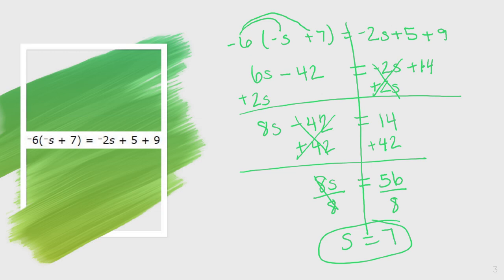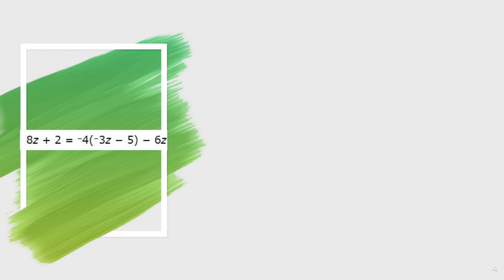Like I said, this is multi-step, so we do have a couple more steps than what we were used to doing earlier. Our next problem: 8z plus 2 equals negative 4 times the quantity negative 3z minus 5, minus 6z. So again, I'm going to start by working as far as I can on my left side and on my right side.